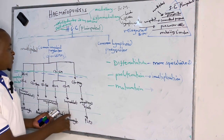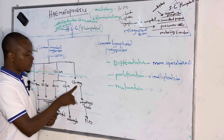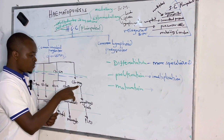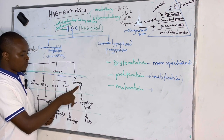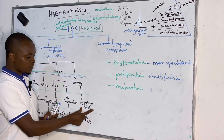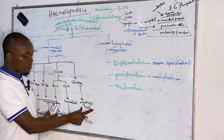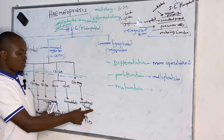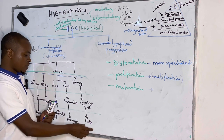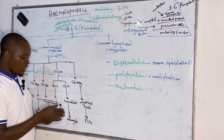For megakaryopoiesis — or thrombopoiesis — the CFU-megakaryocyte gives rise to the megakaryoblast, which is the first recognizable stage during thrombopoiesis. It then gives rise to platelets, which we call thrombocytes.